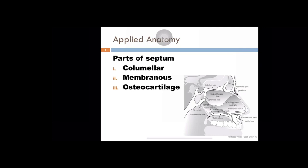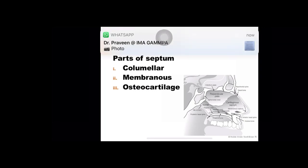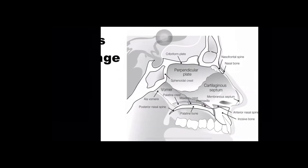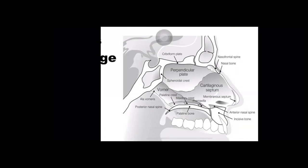A little bit of applied anatomy. I think already anatomy would have been taken. The septum is divided into three parts: the columella, the membranous septum, which consists only of membrane, and the osteocartilaginous complex. The osteocartilaginous septum is the most often dealt with part.